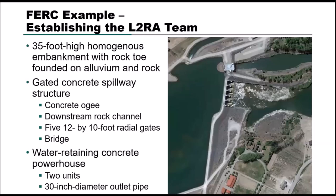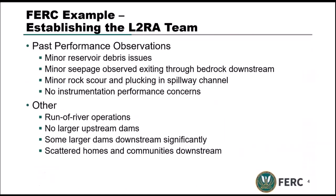So we have a 35-foot-high, homogeneous, earth-filled embankment founded on alluvium and rock, pretty similar to the picture on the right. In addition to the embankment section, you've got a gated concrete spillway structure — a concrete OG with a bridge over top and five radio gates — and a downstream rock channel. You've got a water-retaining powerhouse with two units and a 30-inch diameter outlet pipe. Past performance includes minor reservoir floating debris, minor seepage through bedrock downstream, and minor rock scour and plucking in the spillway channel.